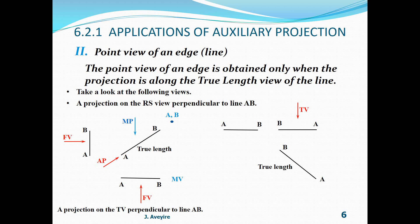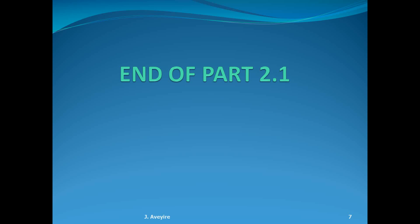Therefore if we project along line AB in the top view in the directions shown, since that is a true length the projection must produce a point view. For the auxiliary projection we need a mutual view — the front view serves as the mutual view; the right side view cannot be used as it is not a mutual view to the plan. Using the mutual projector and projecting along AB gives us the point view AB. End of Part 2.1.